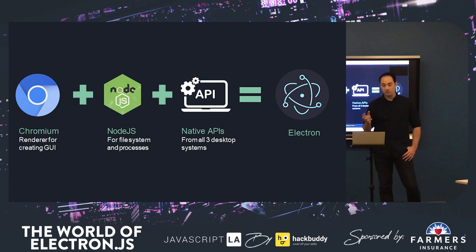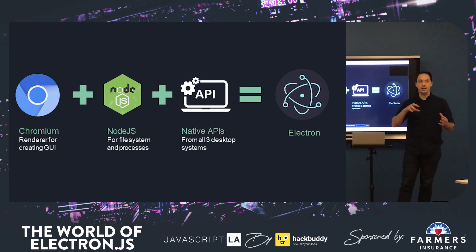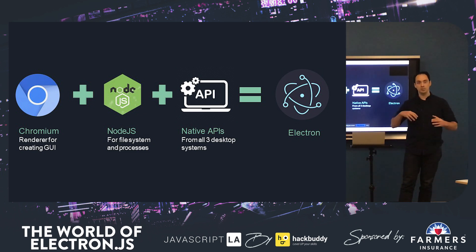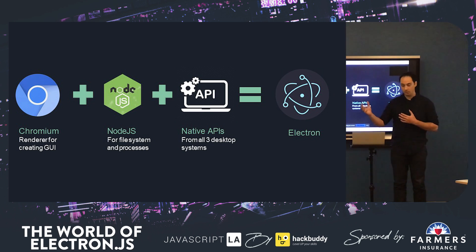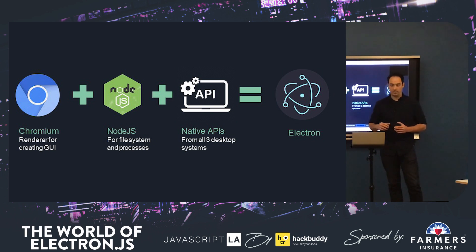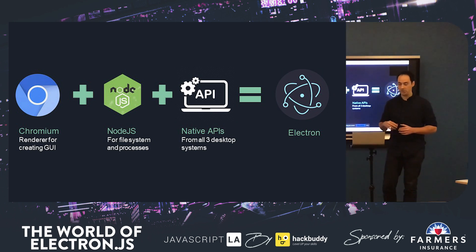So how does Electron accomplish this? It packages three main things together. The first is Chromium — the open source version of Chrome. Every time you install a new Electron project, it pulls down a Chromium renderer version and packages that into your application. You use that to create the visuals, the GUI of the application. You get all the browser APIs already existing in Chromium and you get to use HTML and CSS to make the UI. Note that you're pulling the Chromium renderer, which is a pared-down version — not an entire Chromium instance — so it's not as much as you'd think packaged into your installable.